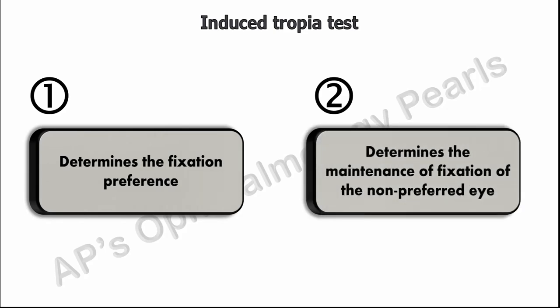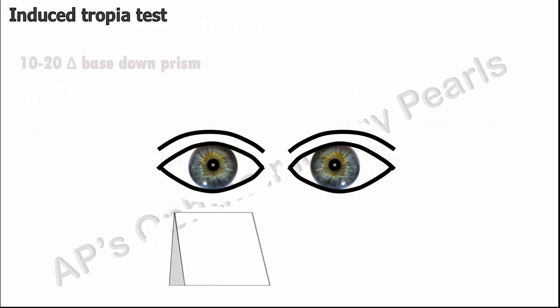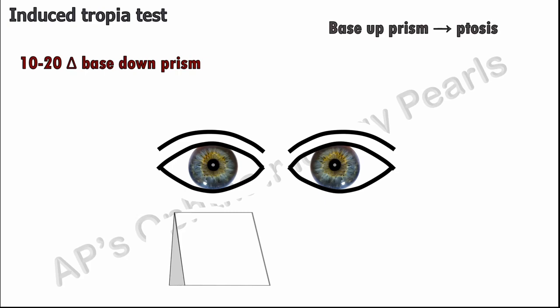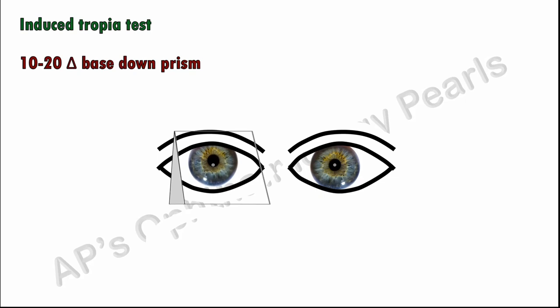A vertical prism — most commonly a 10 to 20 prism diopter base-down prism — is most commonly used. A base-up prism can also be used optionally in non-ptotic cases, but is mandatory when ptosis is present to prevent the eyelid from obstructing the shifted image. When a prism is placed vertically in front of one eye, the eyes are dissociated by the induction of a vertical diplopia, and the eye behind the prism moves up to fix the newly shifted image. Here, the right eye sees the shifted image and the left eye sees the original straight-ahead image.